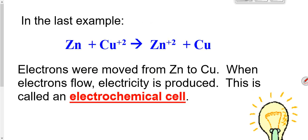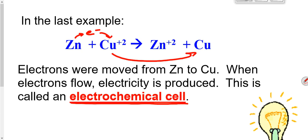In the direction that it is spontaneous — as zinc's electrons are pulled off and put onto the copper, forming copper metal — if I can get those electrons to travel through a wire, I will have an electrochemical cell. And as the electrons flow, I can actually use that flow of electrons.